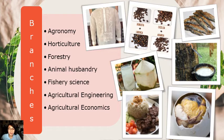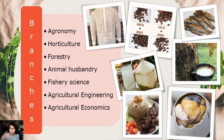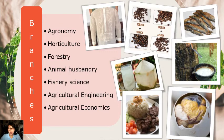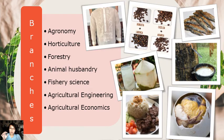Forestry can also produce food products like honey, as well as raw materials for industrial purposes. Then we have animal husbandry, which deals with the practice of breeding and raising livestock to provide food for humans, and to provide power and manure for crops. Agriculture is very flexible — there are so many benefits. In animal husbandry, the waste of animals can be used as fertilizer.